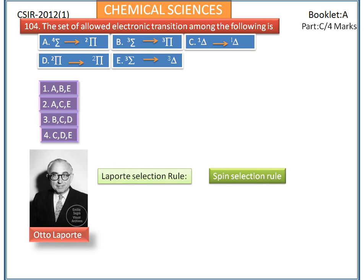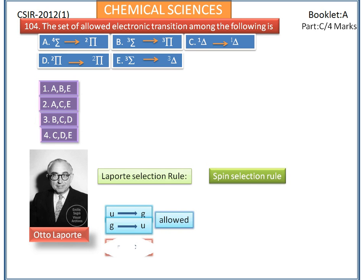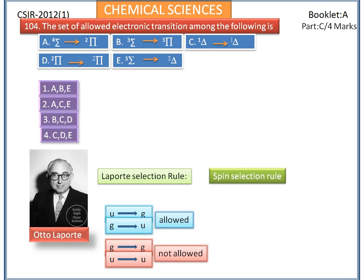First, we consider the Laporte selection rule. In a centrosymmetric molecule or ion, the only allowed electronic transitions are those accompanied by a change in parity — that is, ungerade to gerade and gerade to ungerade transitions are allowed. Whereas gerade to gerade and ungerade to ungerade are not allowed. The selection rule involving the total molecular orbital angular momentum is delta lambda = 0 or ±1.